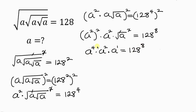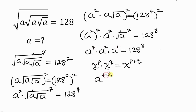Now let's apply the law of indices. When we have x to the p times x to the q, this equals x to the p plus q — we keep the same base and add the powers. We have A as the base, so we add the powers: 4 plus 2 plus 1. The left hand side becomes A to the power of 7, and this is equal to 128 to the power of 8.